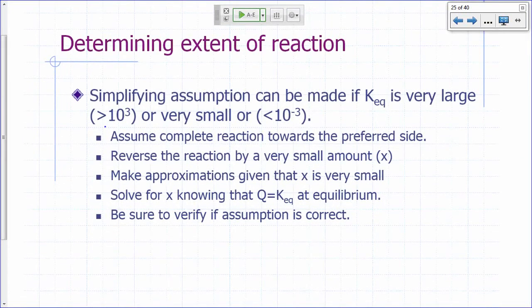There's a simplifying assumption you can make if Keq is very large, and usually anything larger than 10 to the third, you'd be able to make this assumption, or if it's very small, less than 10 to the negative 3. What does it mean when Keq is very large? At equilibrium, what's favored? It's going to be mostly products, right? So you can assume the reaction is essentially complete, shift it all the way to the product side.